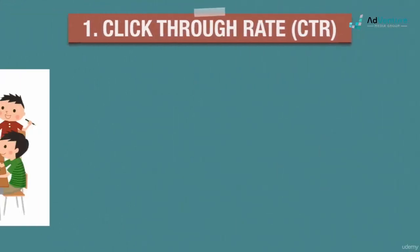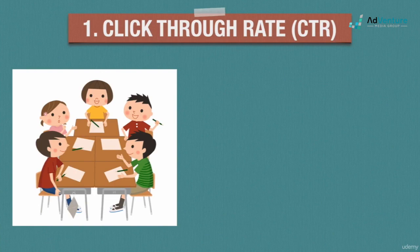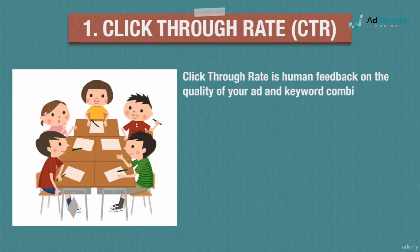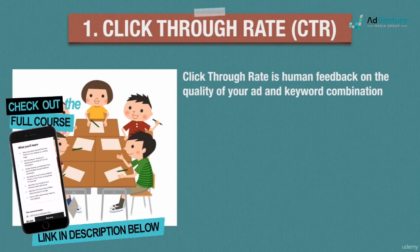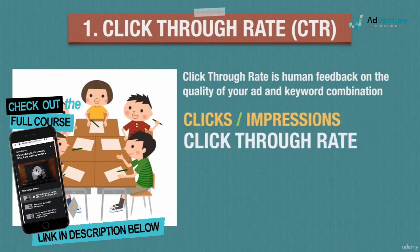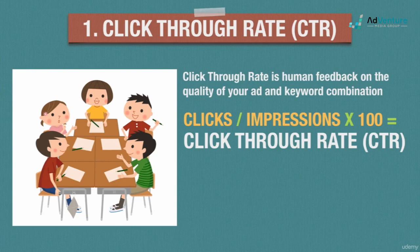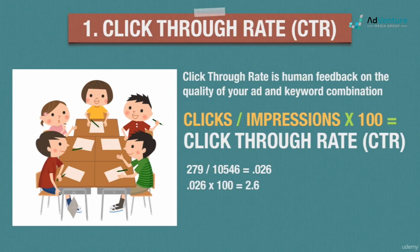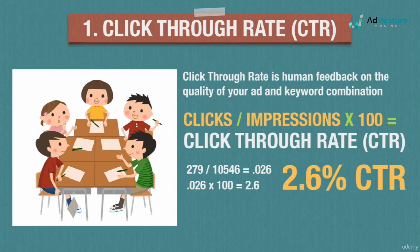Click-through rate can be thought of as the people's court, and when thought of that way, it makes a lot of sense why CTR is the most important factor in determining your quality score for any given keyword. While algorithms can do a great job at a lot of things, they still can't assess human appeal as well as humans can. A keyword's actual click-through rate tells us how appealing your keyword and ad combination is to actual people using Google search. Your CTR is calculated by dividing the number of clicks a keyword has received by that keyword's number of impressions and then multiplying by 100 to get the percentage. So for example, a keyword with 279 clicks and 10,546 impressions has a CTR of 2.6%.